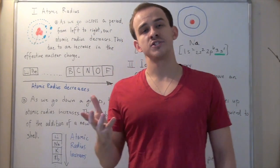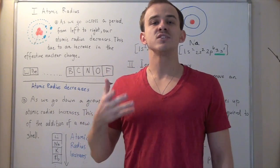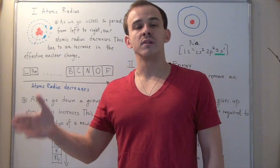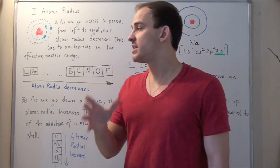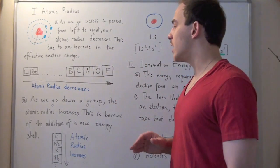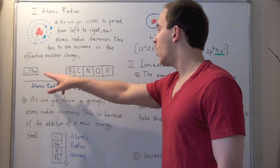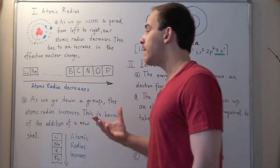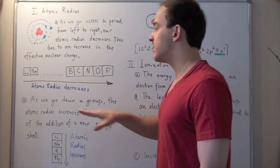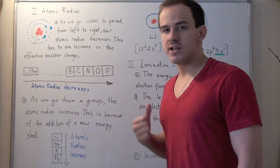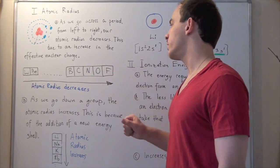I want to ask the question: what happens to our atomic radius as we go from left to right across a period on our periodic table? For example, let's take the following period — let's begin with lithium and go all the way up to fluorine. What happens to our atomic radius? We see that atomic radius decreases as we go from lithium to fluorine.